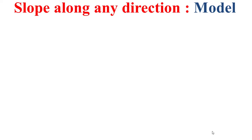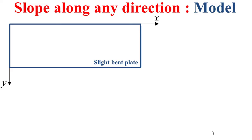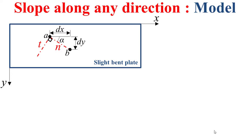Now I'll try to determine the expression of the slope along any direction of the plate. Based on the same model of the slightly bent plate, we consider a direction n defined by the segment AB. The point B is distant from A by dx in the direction x, and by dy along the direction y. This direction n makes an angle alpha with the x direction, and the perpendicular to this direction n is the direction t. Based on this model, we can determine the expression of the slope theta n along the n direction, given by the formula that you see now in this slide.